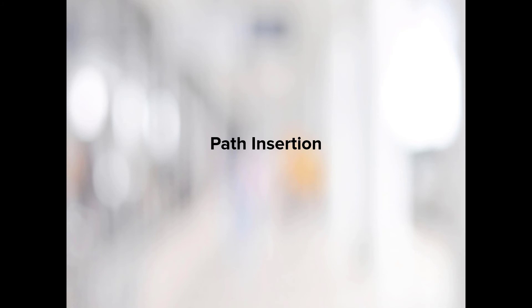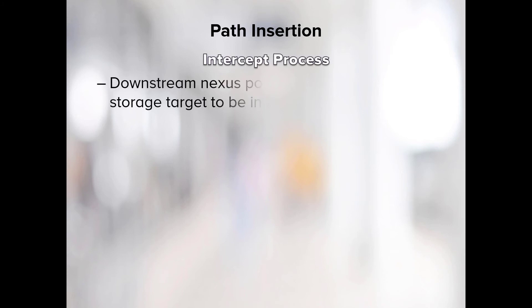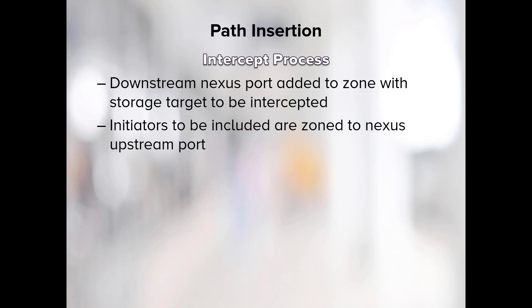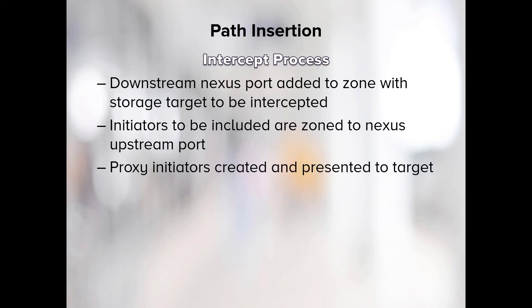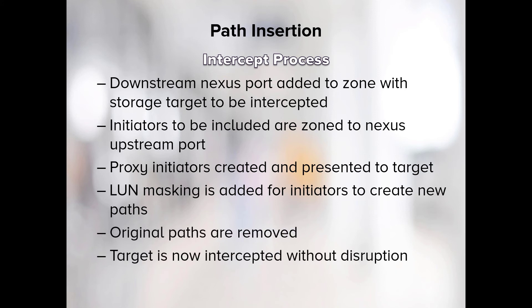Path insertion intercept process: If virtual fabric has not been licensed for the Brocade switches in the SAN environment, path insertion can be used. The downstream nexus port is added to the zone with the selected storage target to be intercepted. Initiators to be included are zoned to the nexus upstream port. Proxy initiators are created with one-to-one mapping and presented to the target. When the LUN masking is added for these initiators, new paths are created. When the original paths are removed, the target is intercepted without disruption.